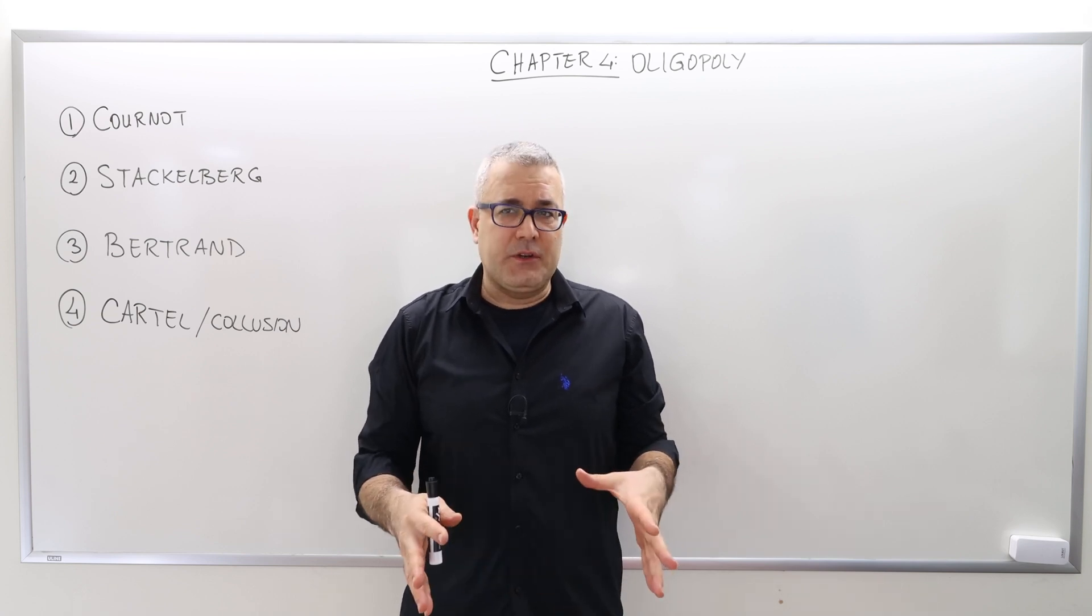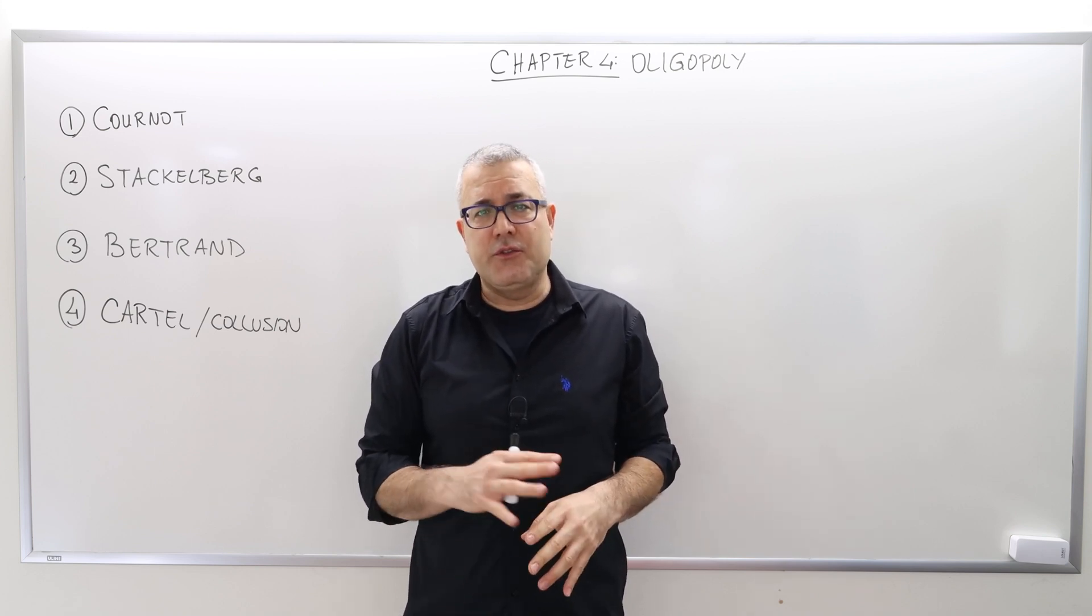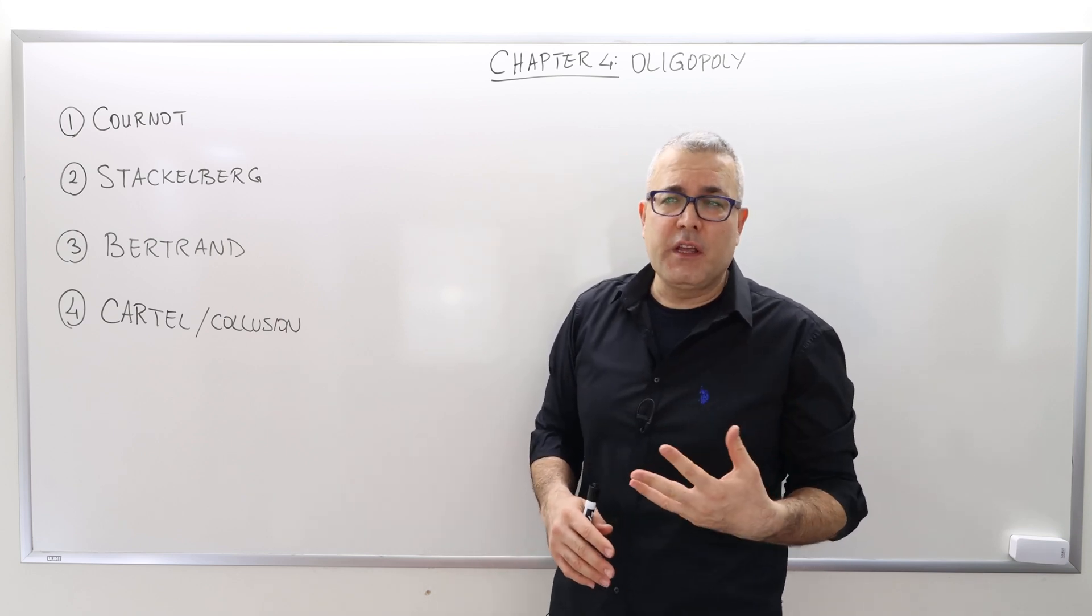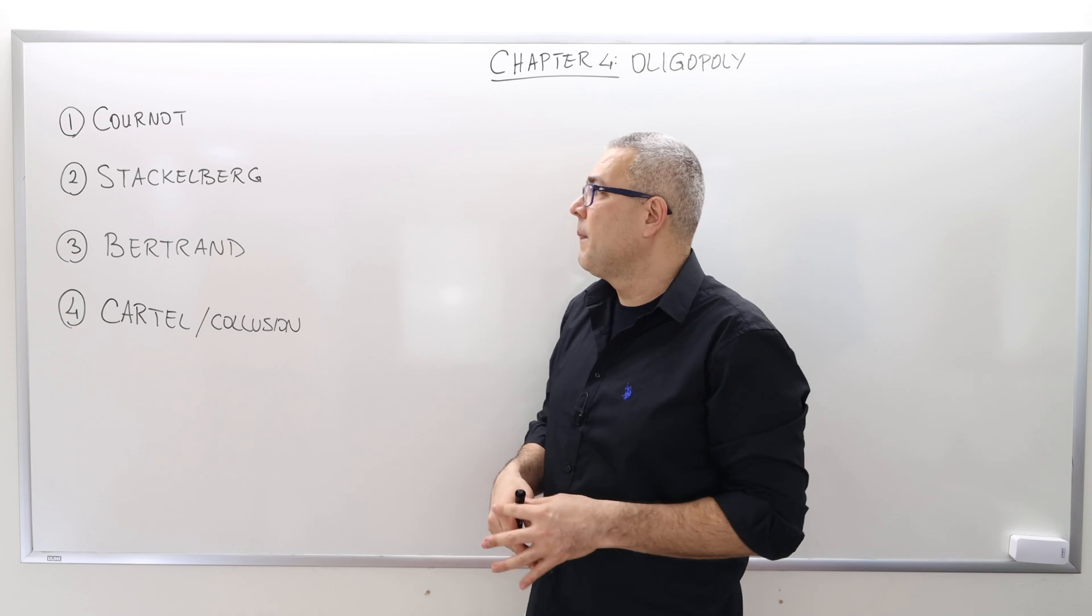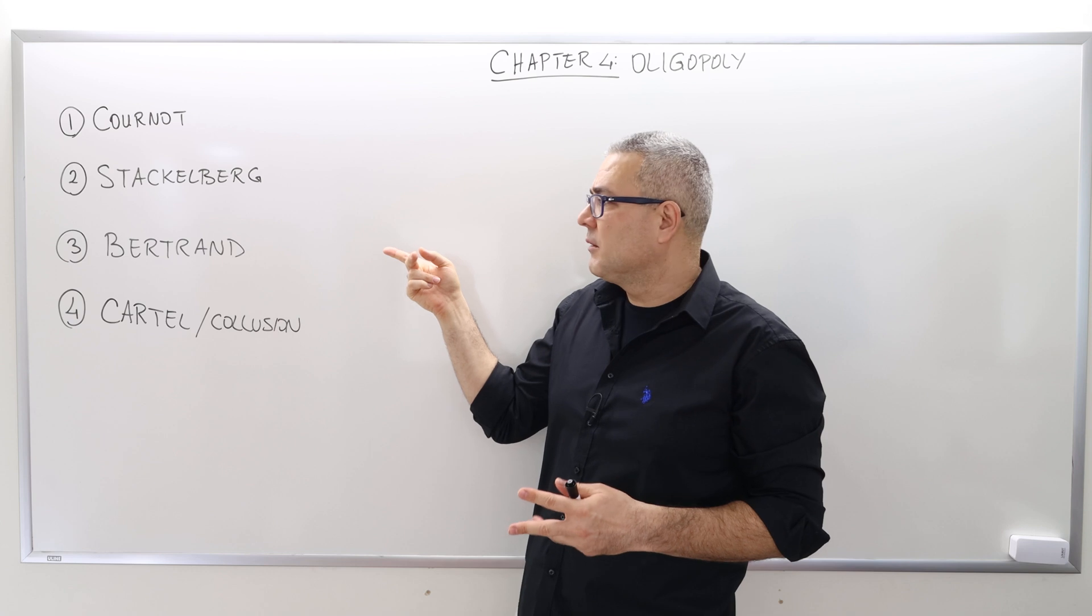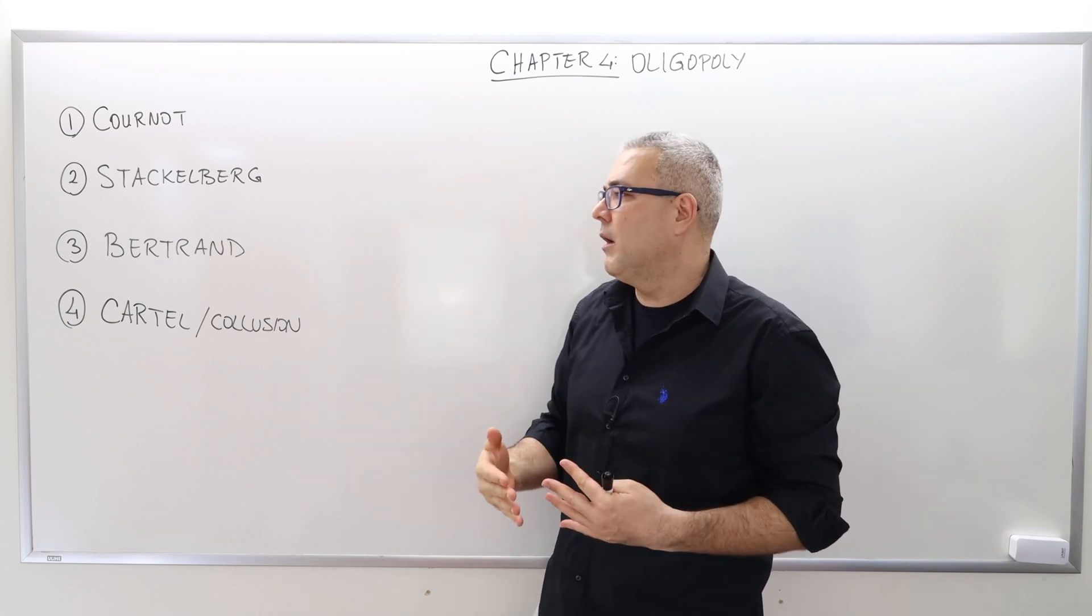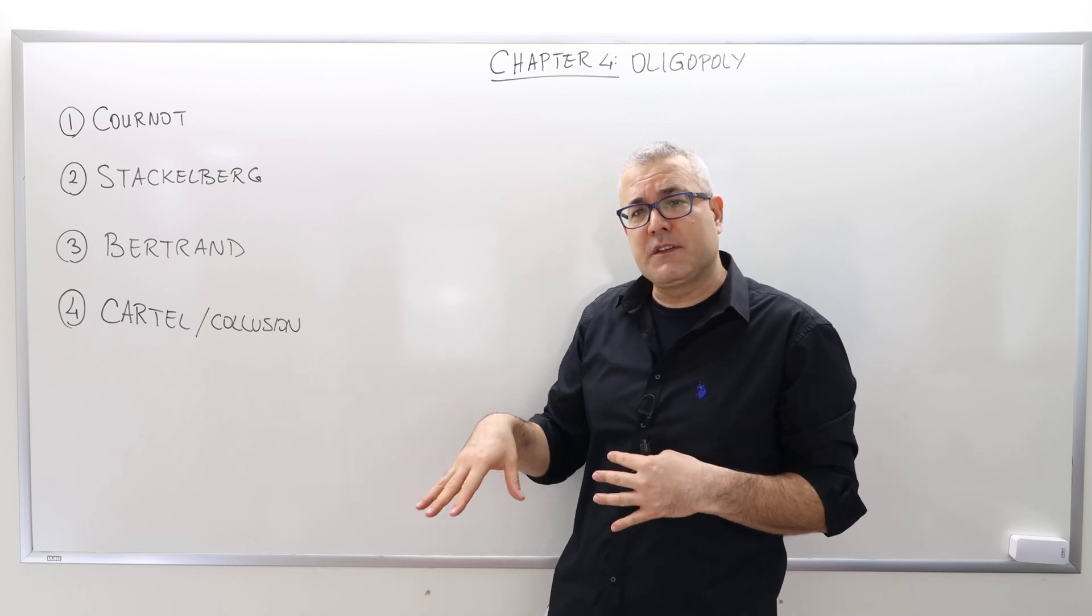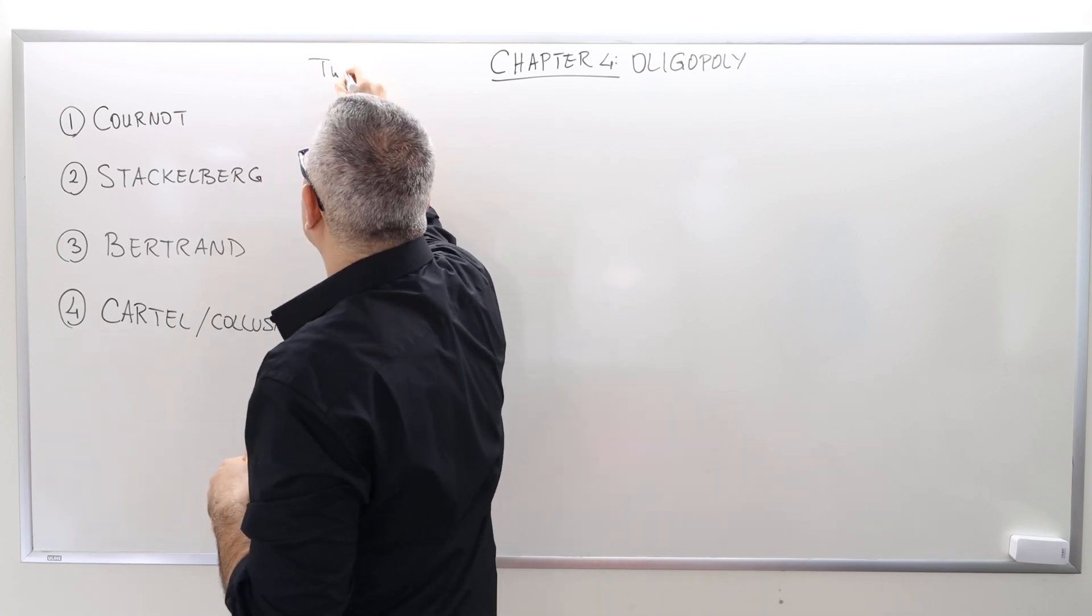In this chapter, there are four main topics that you should clear. The first three are specific models of duopoly. The first model we're going to talk about is Cournot, the second one is Stackelberg, and then the third one is the Bertrand. These are pretty standard oligopoly models, but for this course we're going to talk about two firm cases.